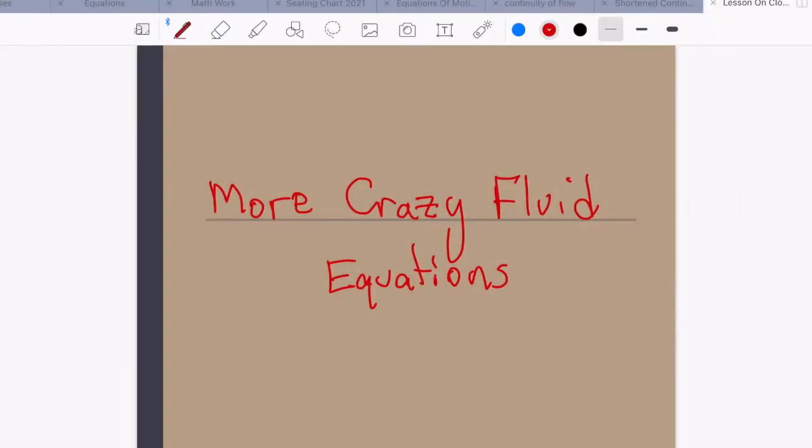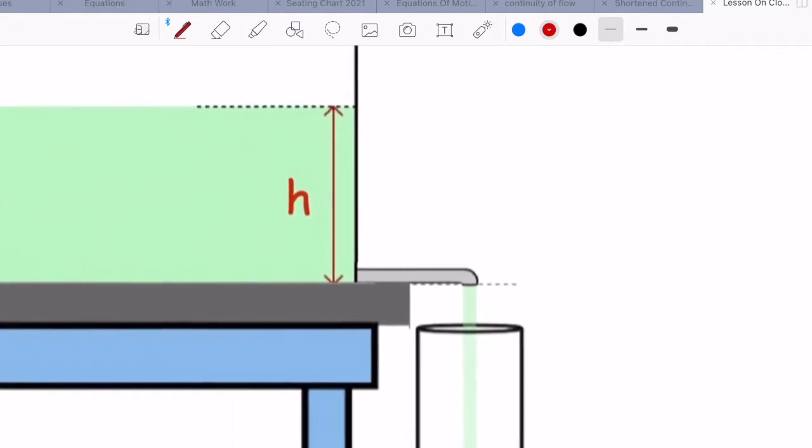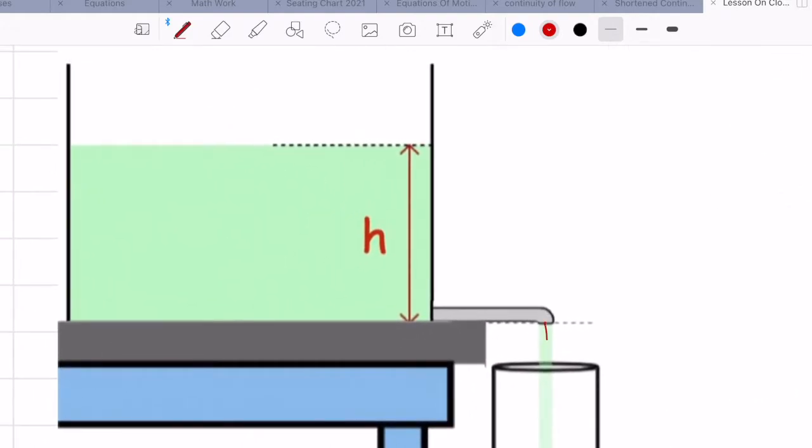So today I'd like to talk to you about some more crazy fluid equations. In our last episode, we were looking at finding the velocity of the fluid when it came out of our beverage container. And we found a nice simple result.